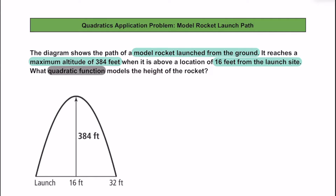To write a function for this, let's first identify a few key points. The coordinates of the launch location are going to be (0, 0). Then we have the location where the model rocket hits the ground at (32, 0). Then we have the point (16, 384), which is going to mark the vertex of the parabola, or the highest point of the rocket.